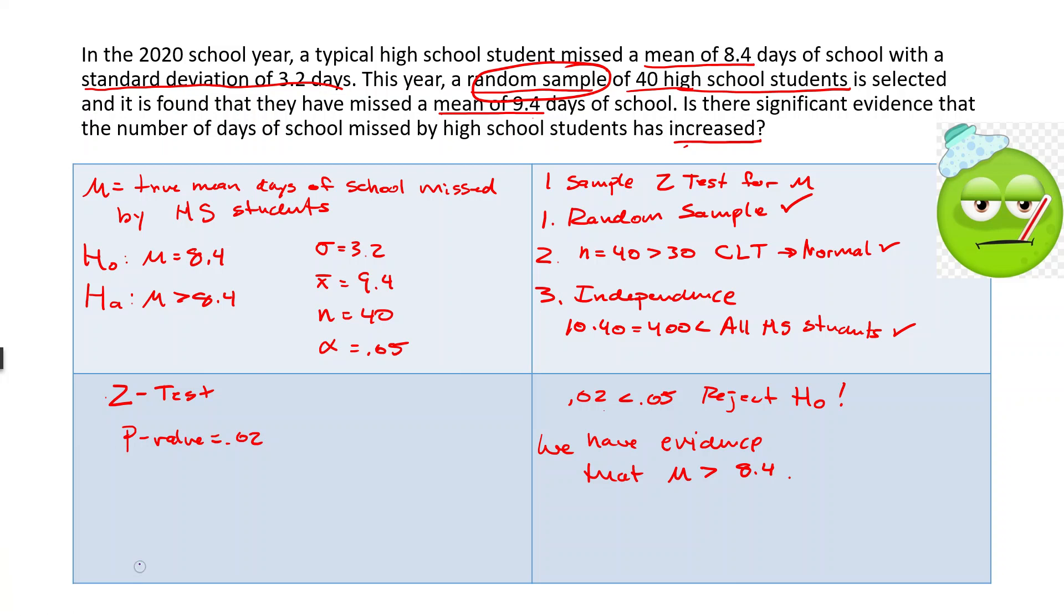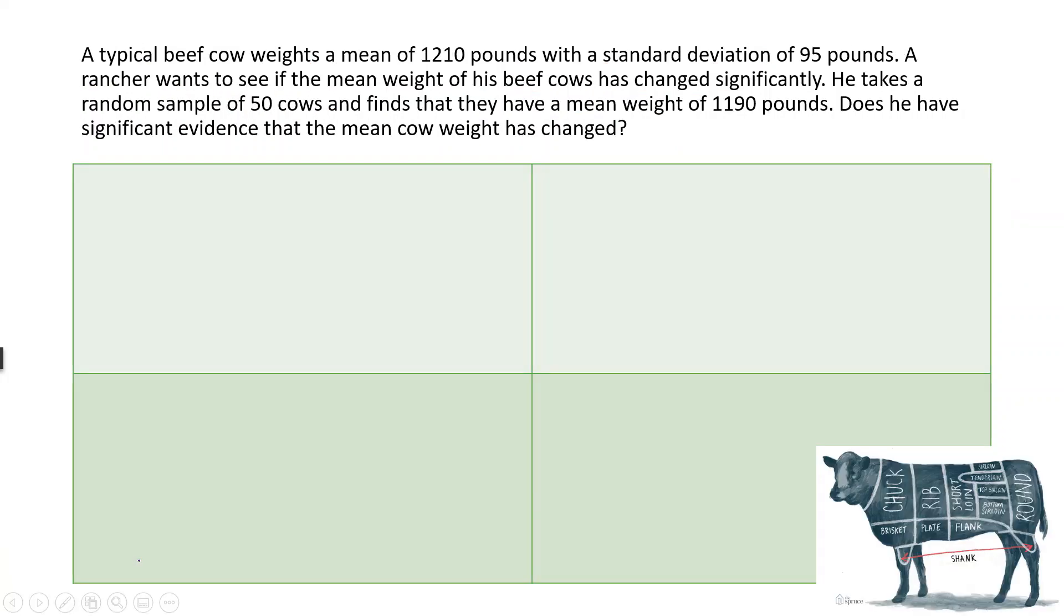Let's try one more. Looks like we're working with cows here. So a typical beef cow weighs a mean of 1,210 pounds with a standard deviation of 95 pounds. A rancher wants to see if the mean weight of his cows has changed significantly. He takes a random sample of 50 cows and finds that they have a mean weight of 1,190 pounds. Does he have significant evidence that the mean cow weight has changed?